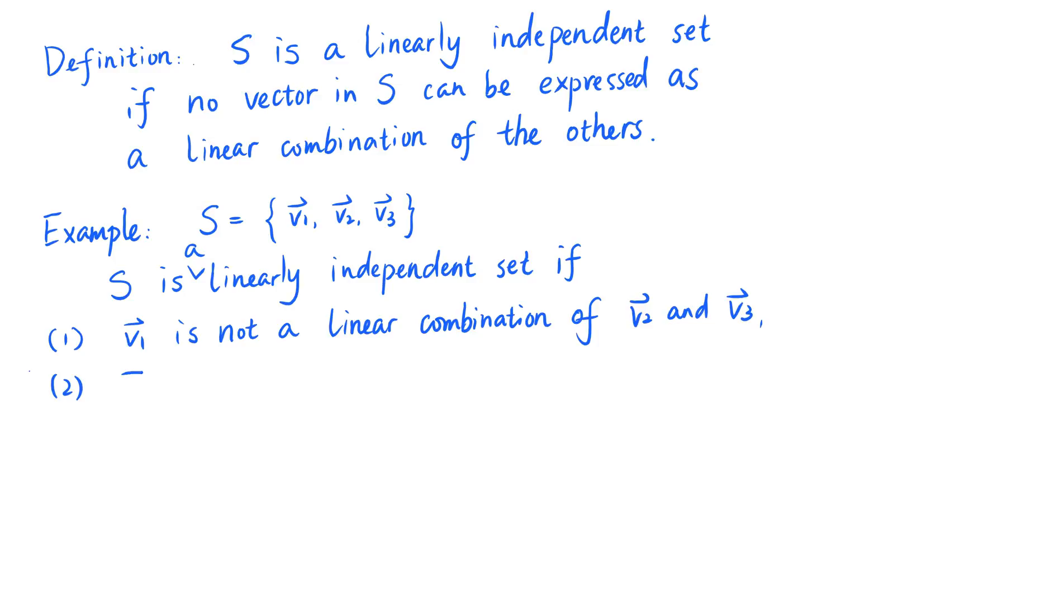Two, v sub 2 is not a linear combination of v sub 1 and v sub 3. And three, v sub 3 is not a linear combination of v sub 1 and v sub 2.